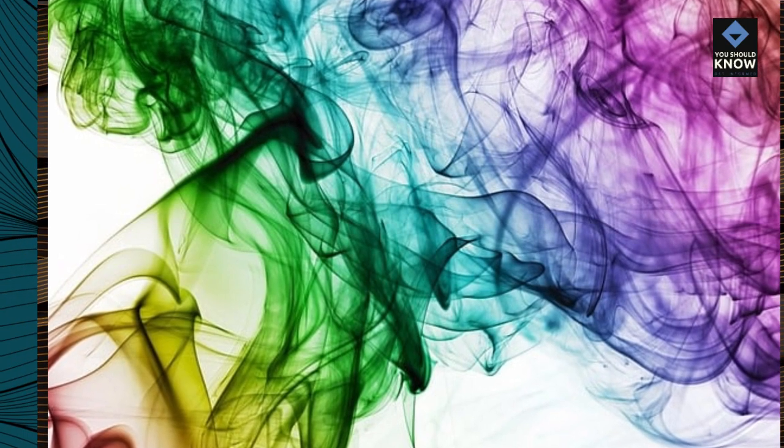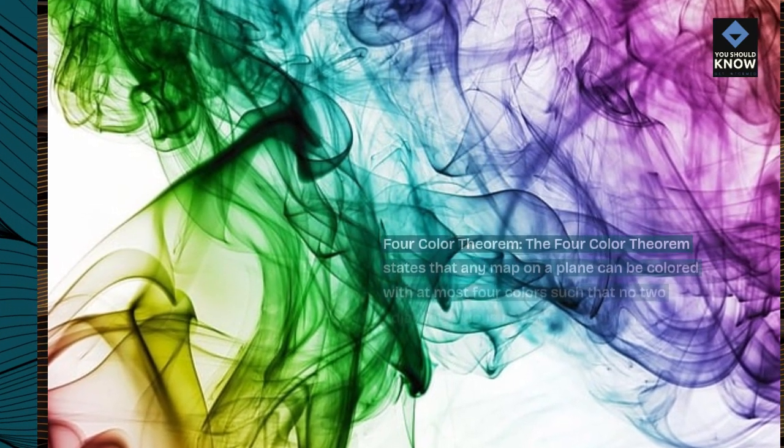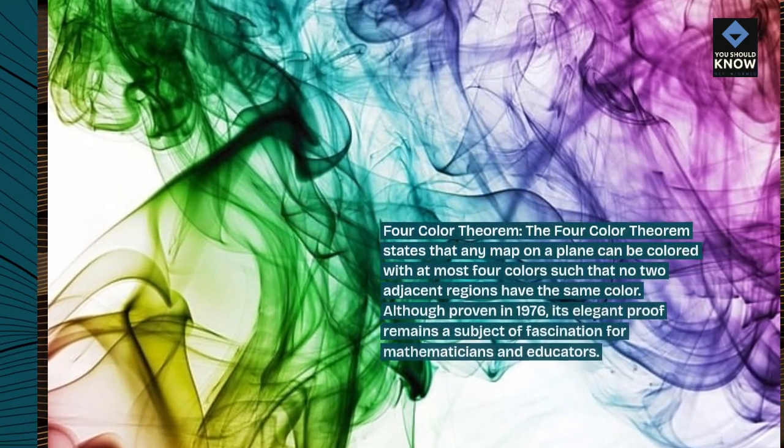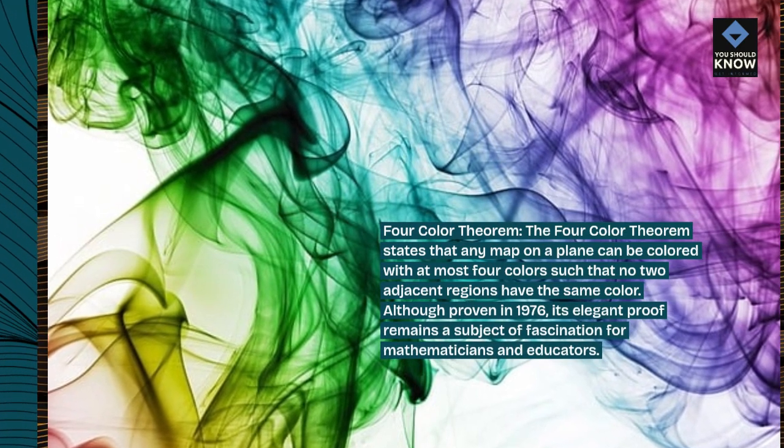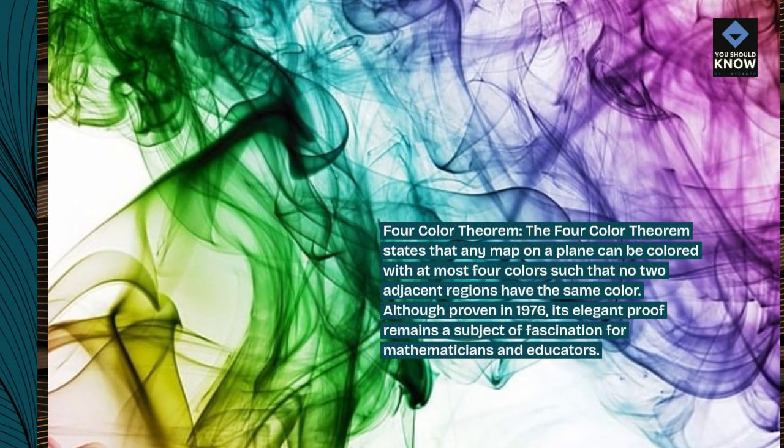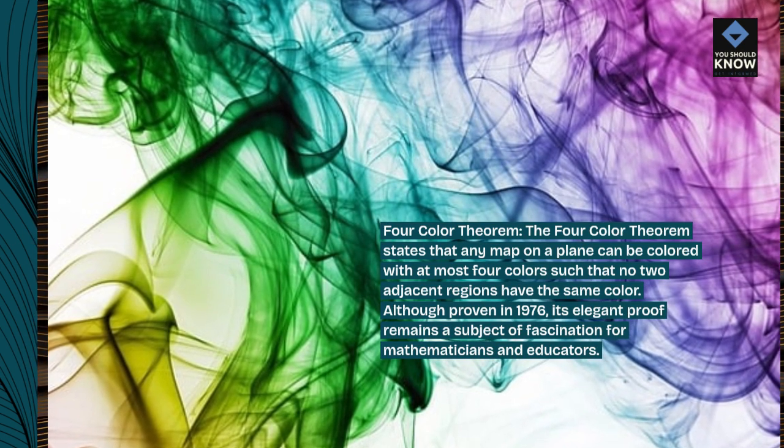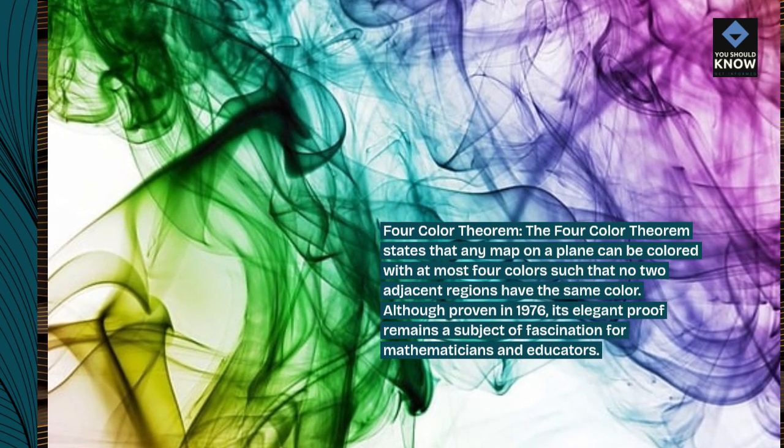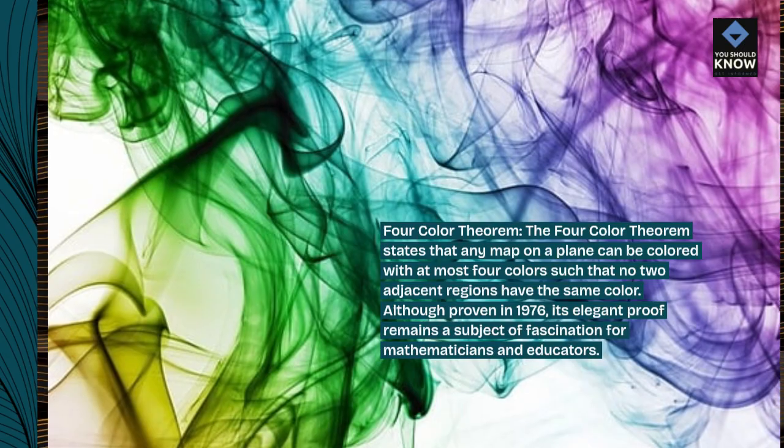Four-Color Theorem: The four-color theorem states that any map on a plane can be colored with at most four colors such that no two adjacent regions have the same color. Although proven in 1976, its elegant proof remains a subject of fascination for mathematicians and educators.